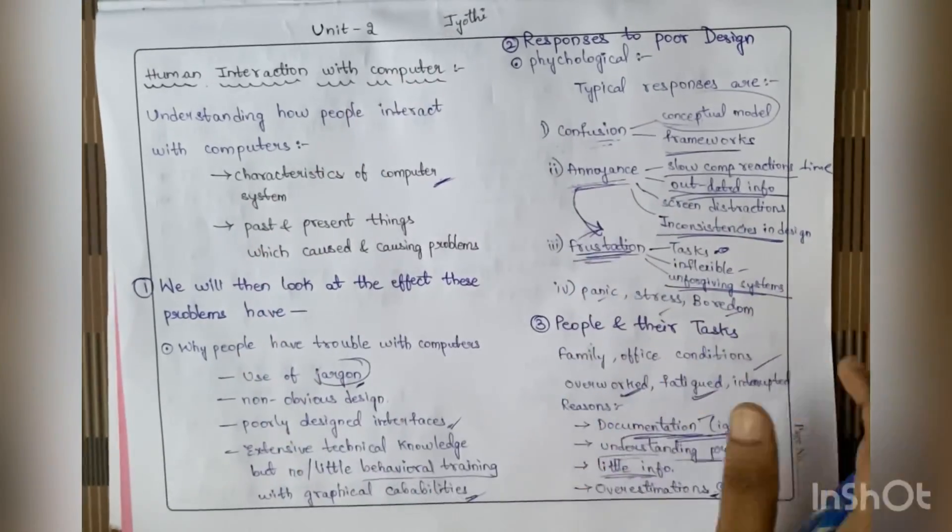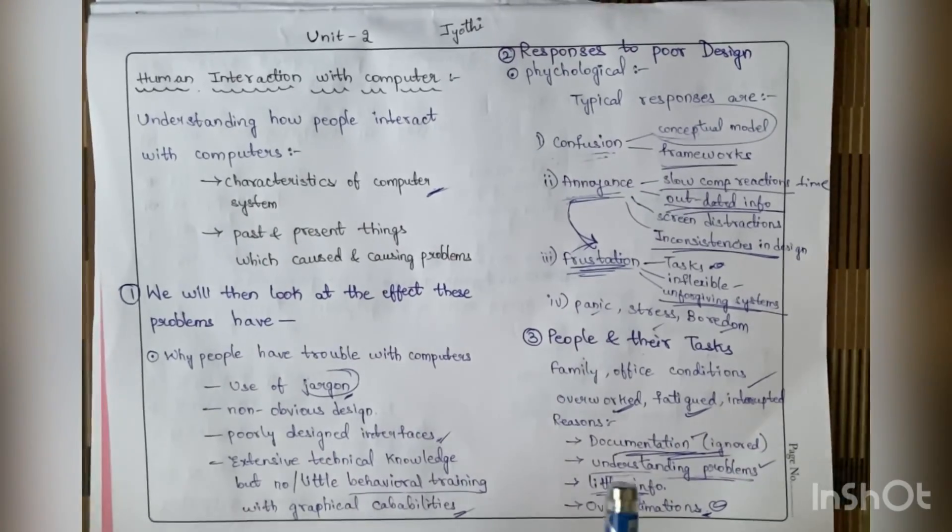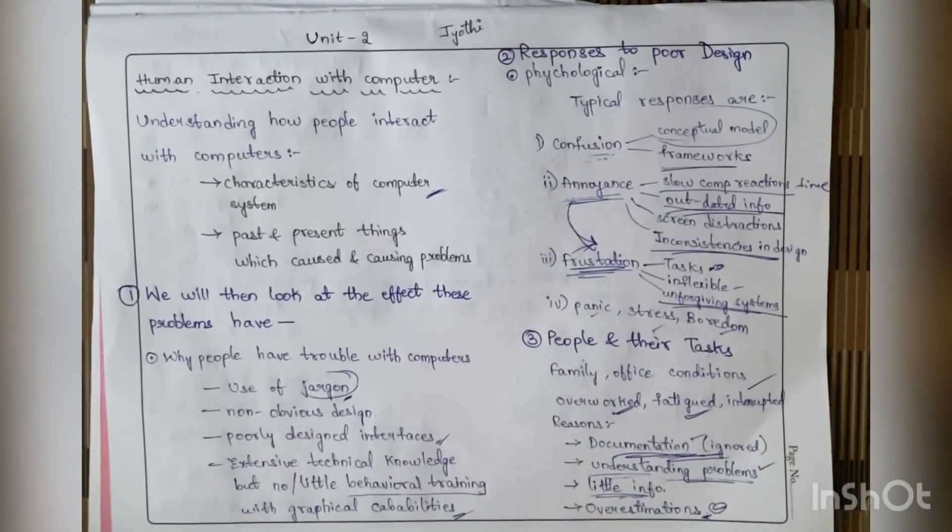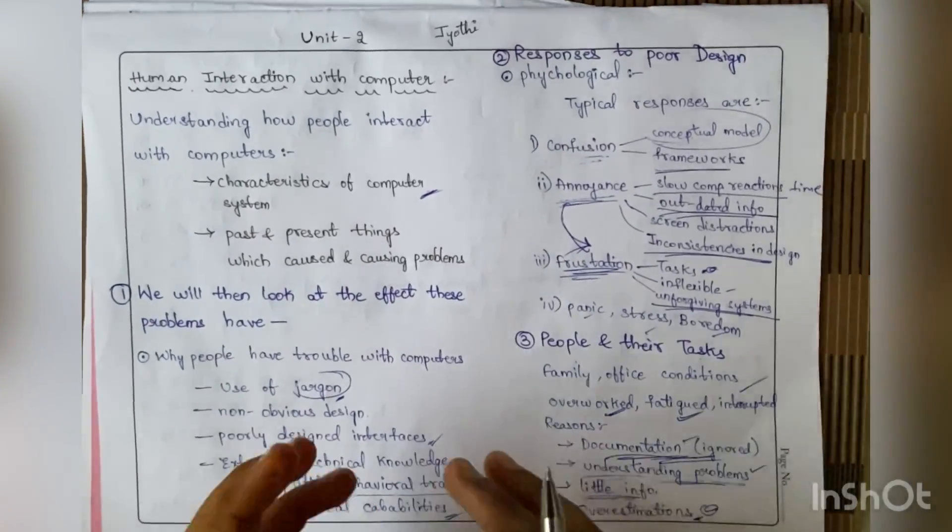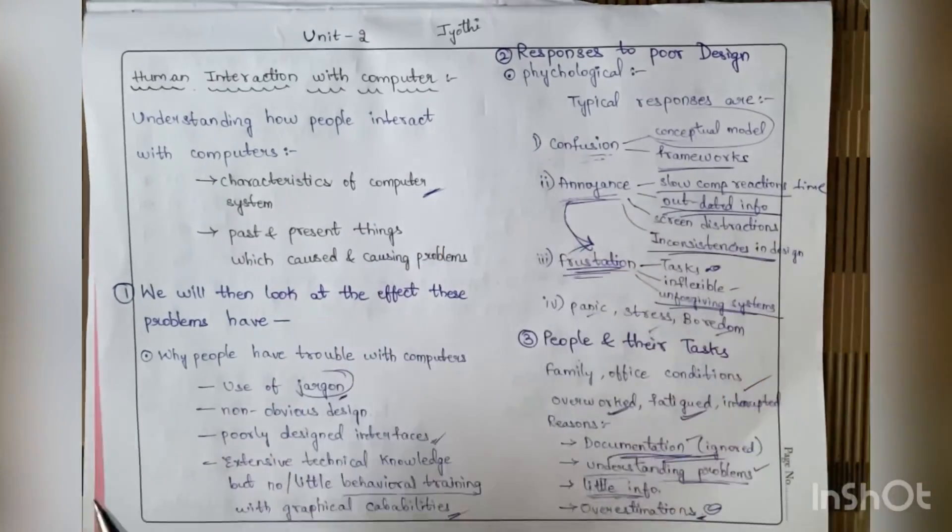The first topic in the second unit is human interaction with computers. That means we need to understand how people are interacting with computers. To understand it, people should know the characteristics of the computer system.